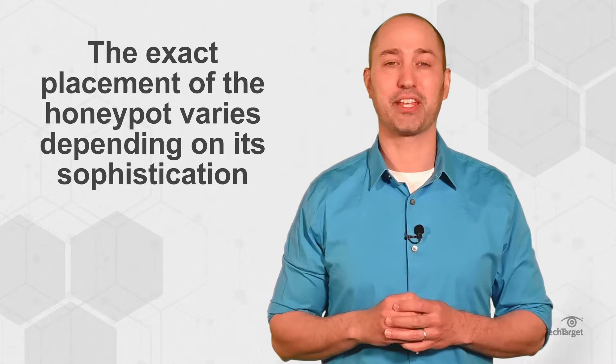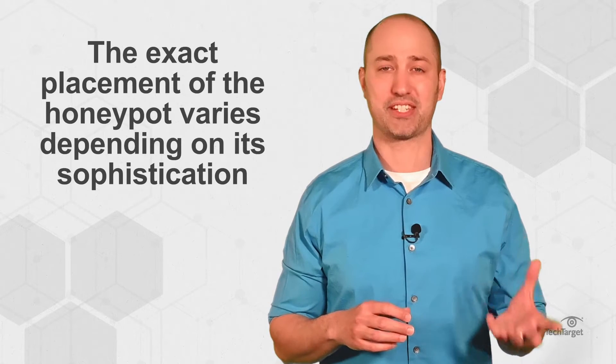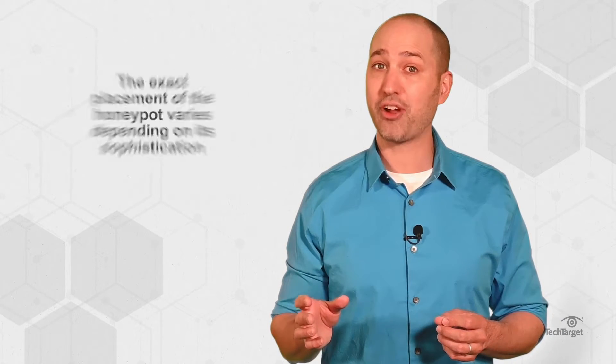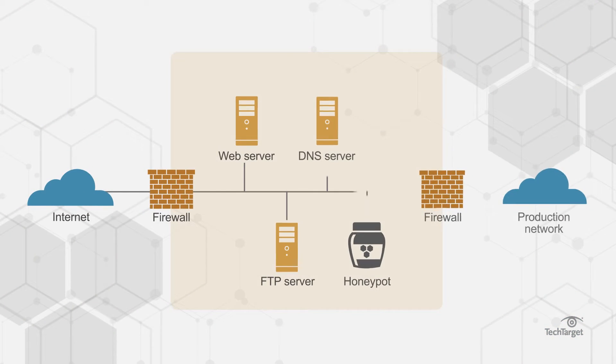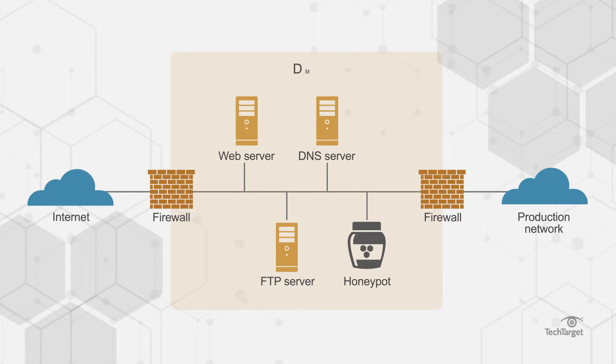The exact placement of the honeypot varies depending on its sophistication, the traffic it aims to attract, and its proximity to sensitive resources inside the corporate network. It might be placed in the network's demilitarized zone or DMZ to still be part of the network, or outside the external firewall to detect attempts to enter the internal network. But no matter the placement, it will always have some degree of isolation from the production environment.